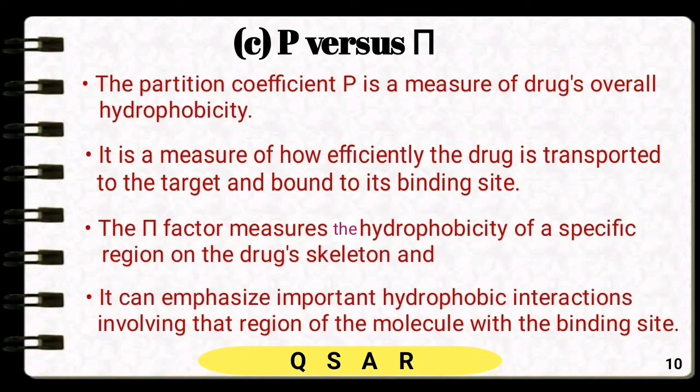Comparing partition coefficient P and substituent hydrophobicity constant π: P is a measure of the drug's overall hydrophobicity and reflects how efficiently the drug is transported to the target and bound to the binding site. π, the substituent hydrophobicity constant, measures the hydrophobicity of a specific region on the drug skeleton and emphasizes the important hydrophobic interactions involving that region of the molecule with the binding site.